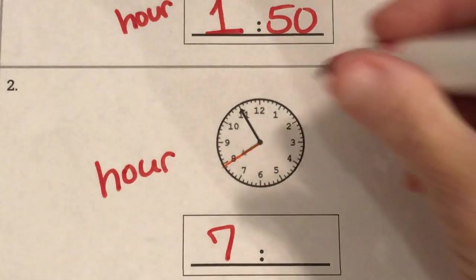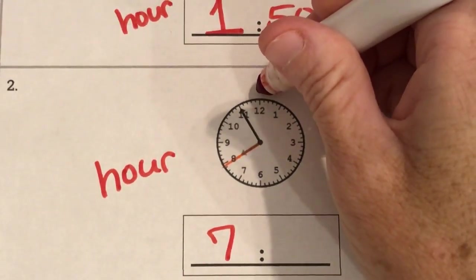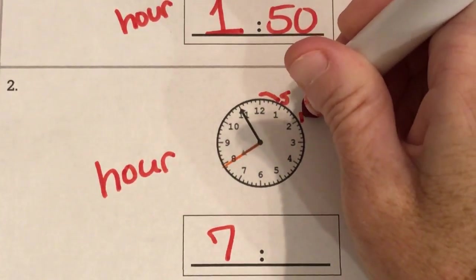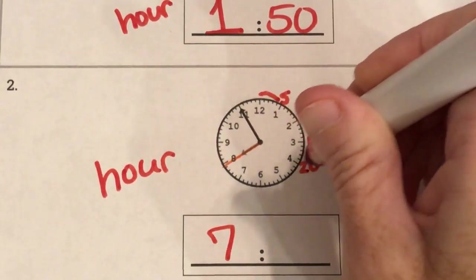My minute hand is my long one. Now remember I start it here and then I go here's my five and I'm gonna skip count: 10, 15, 20.